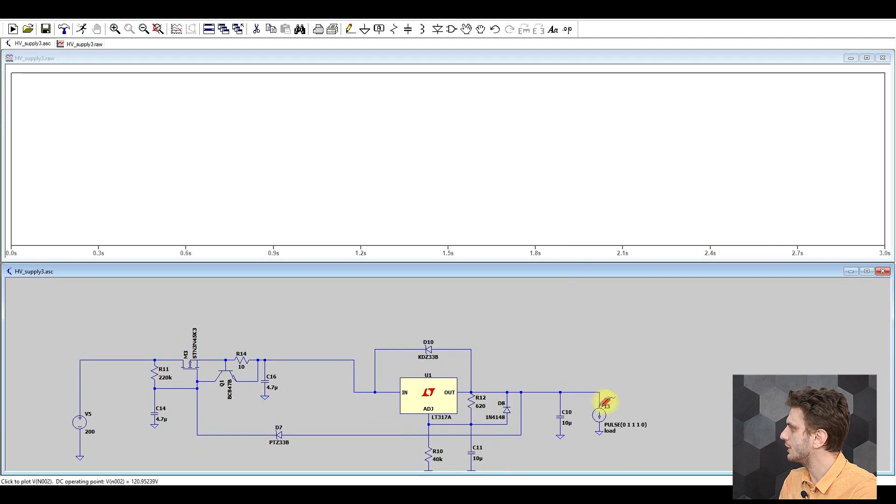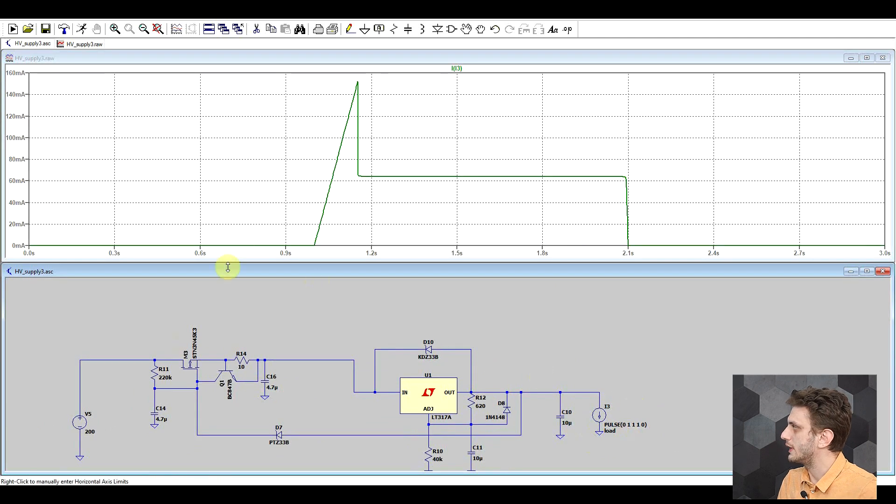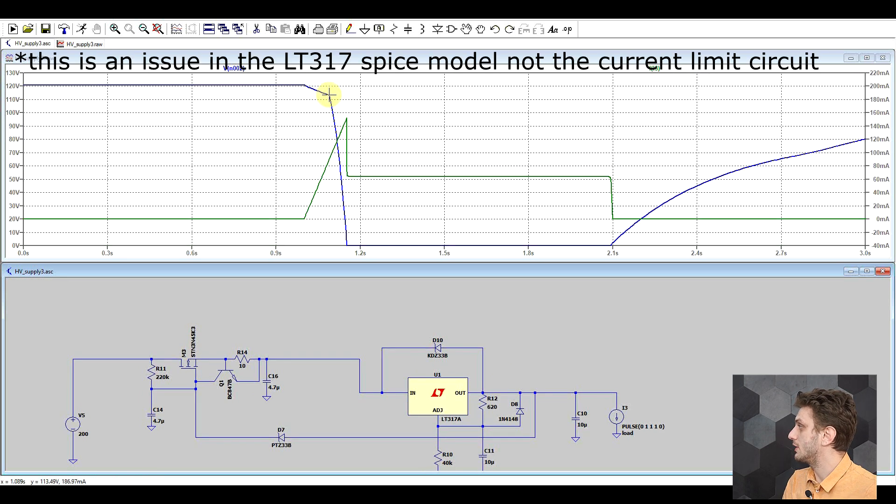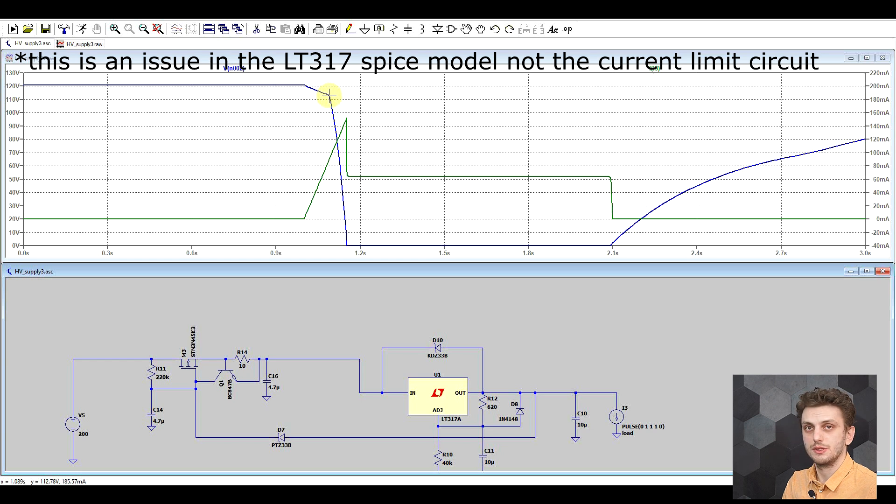So if we run the circuit, I've added a load that increases in current. And if we look at the output voltage, we can see that the output stays fairly constant, although it's starting to drop as soon as the current is increasing. But after a certain threshold is met, then the output just drops. So the current limit is helping to deactivate the circuit.